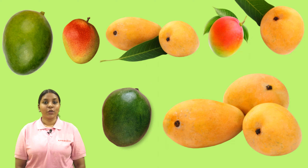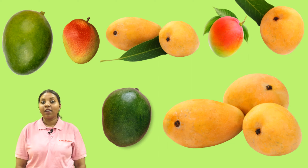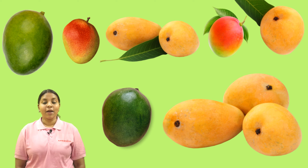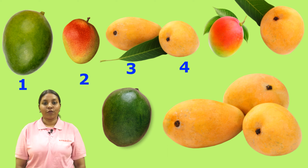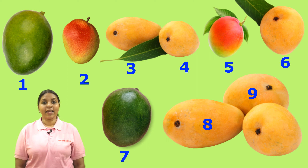Now you can see in the picture, there are a lot of mangoes. These are mangoes. Now let's count all the mangoes together. 1, 2, 3, 4, 5, 6, 7, 8, 9 and 10. Correct.